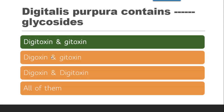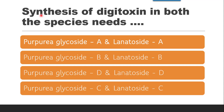The next question concerns purpurea specifically. As just discussed, Digitalis purpurea contains both digitoxin and gitoxin. So the correct answer is digitoxin and gitoxin.